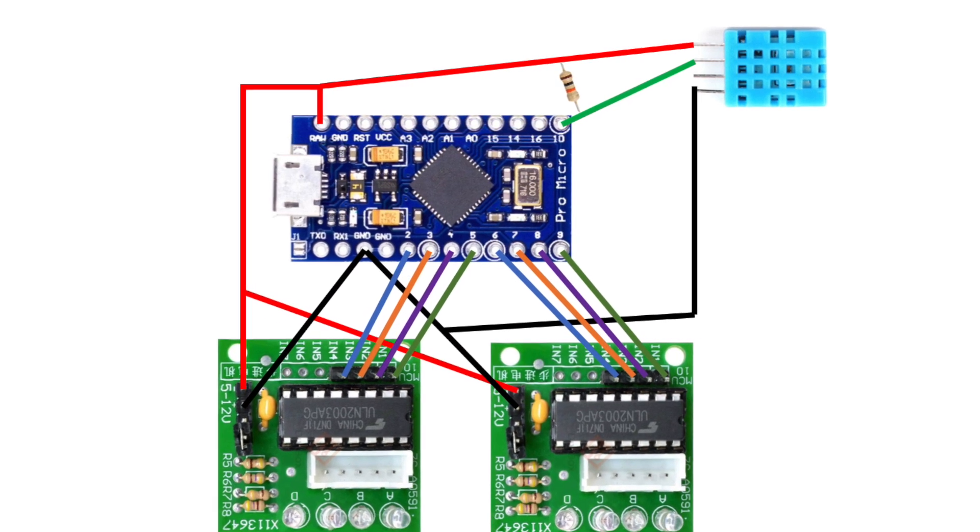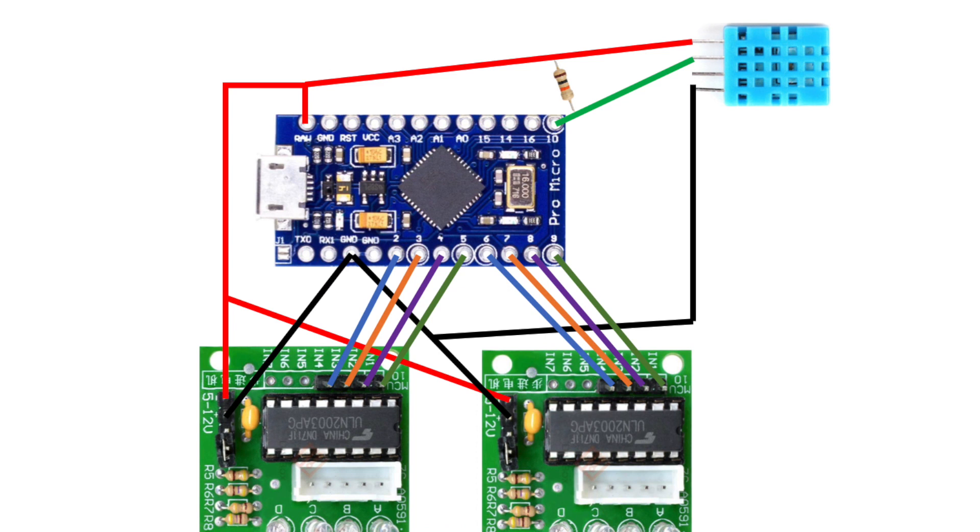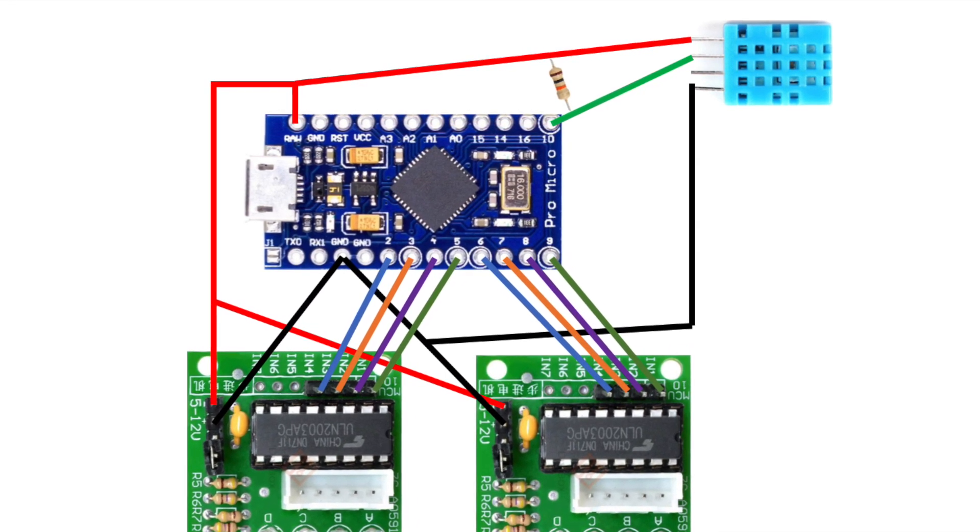You'll also need to add your power connections to the sensor and stepper drivers, as well as a 10k resistor between the connection to pin 10 and 5 volts.